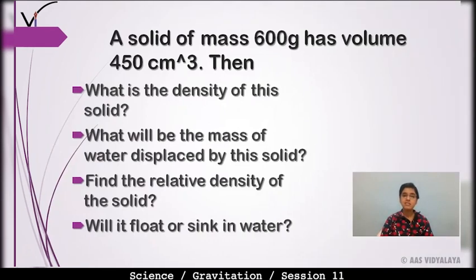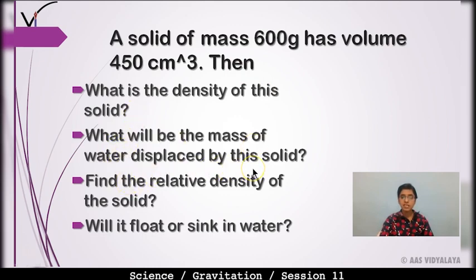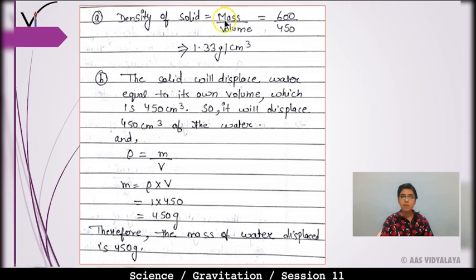Numerical: A solid of mass 600 gram has volume 450 cm³. What is the density of the solid? Density of solid = mass / volume = 600 / 450 = 1.33 g/cm³. Next, what will be the mass of water displaced by this solid, and find the relative density of the solid — will it float or sink in water?